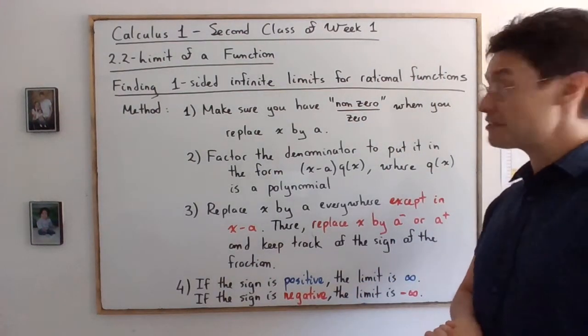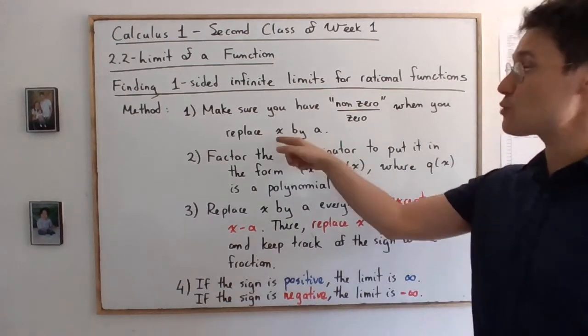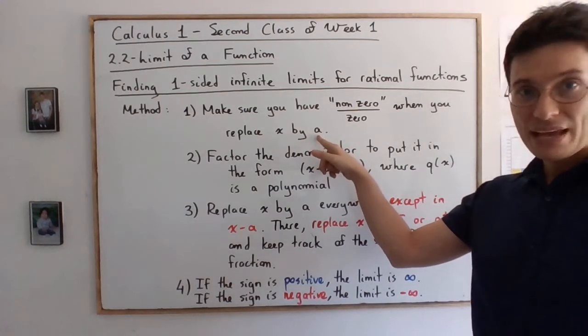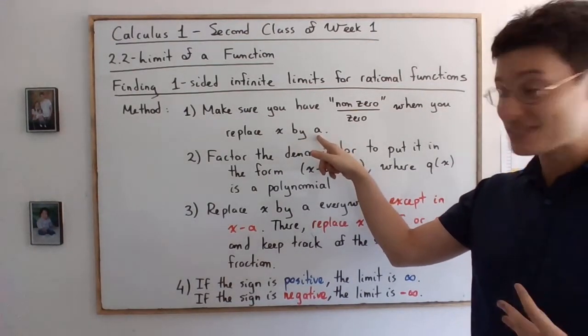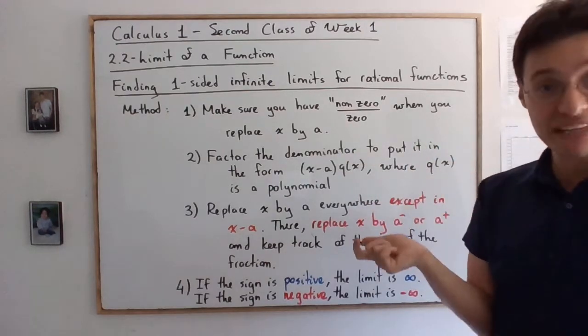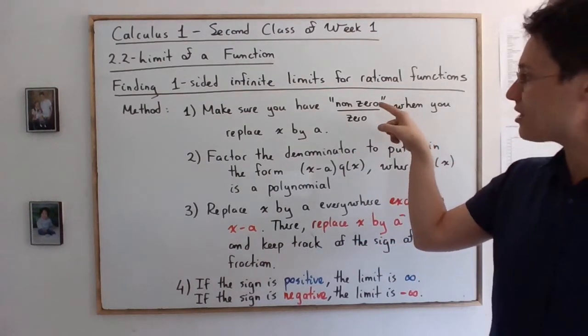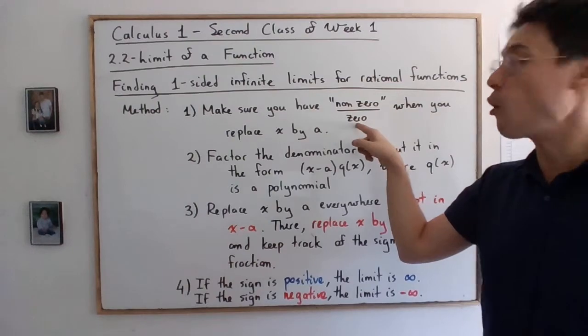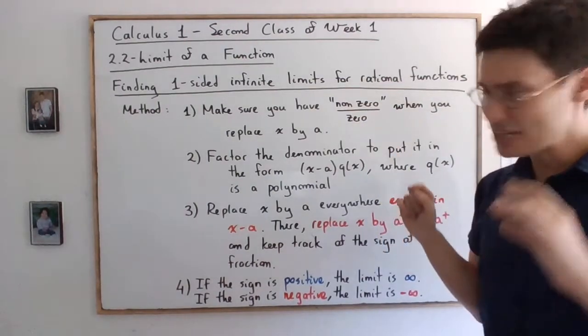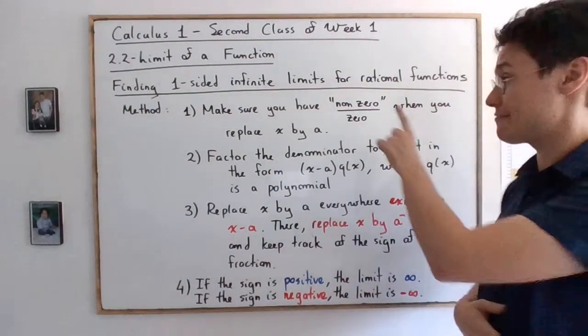So the first method in order to figure out these limits is to actually replace x by a. And you will have an asymptote, you will have an infinite limit, in other words, if the result is non-zero over zero. So that's step number one. Make sure that you have that.